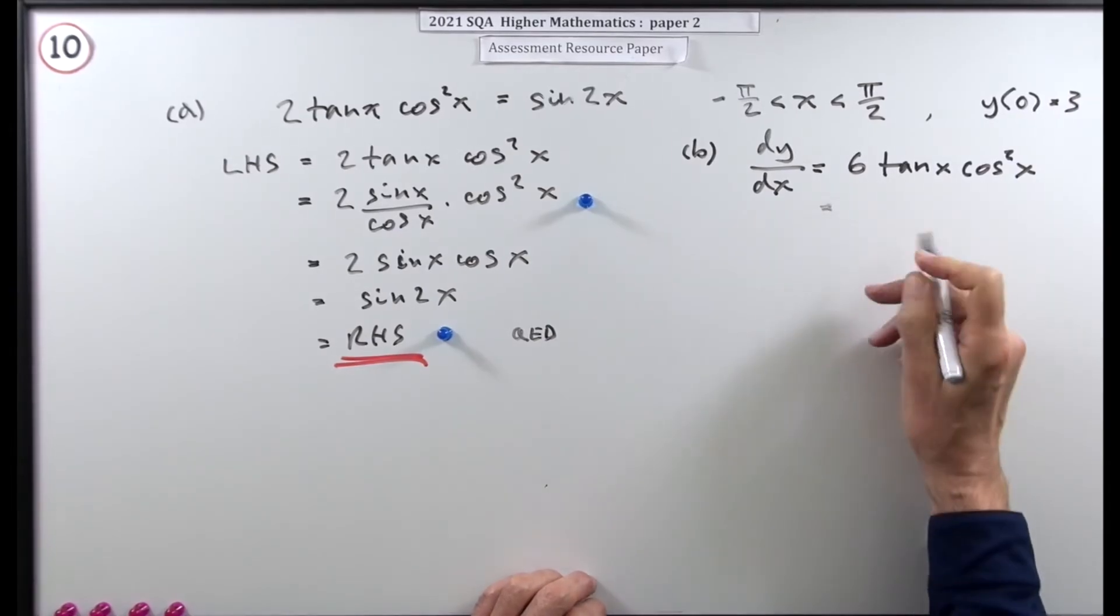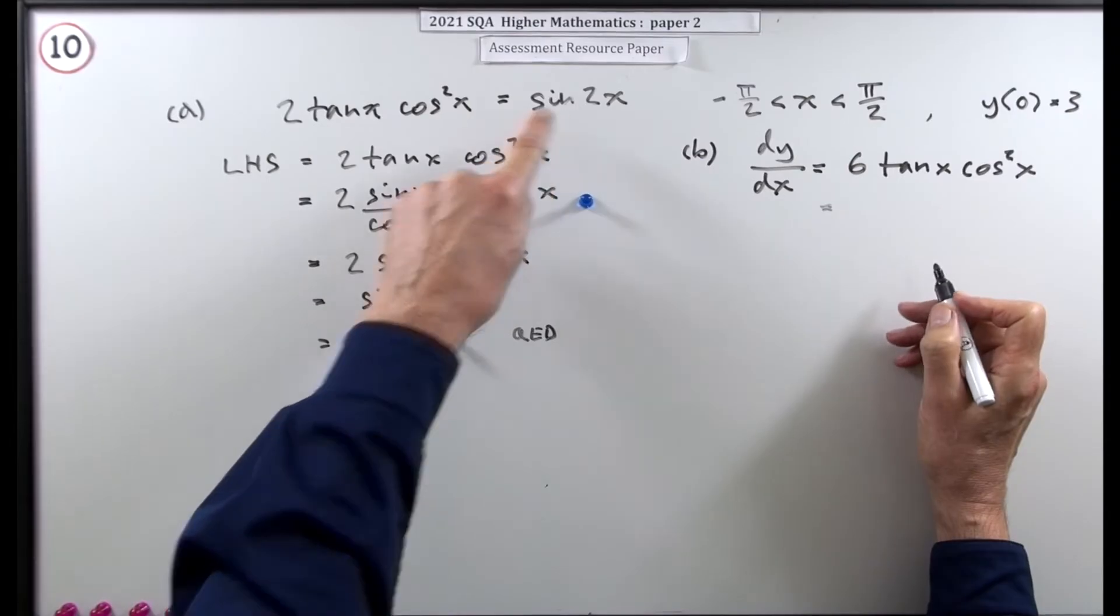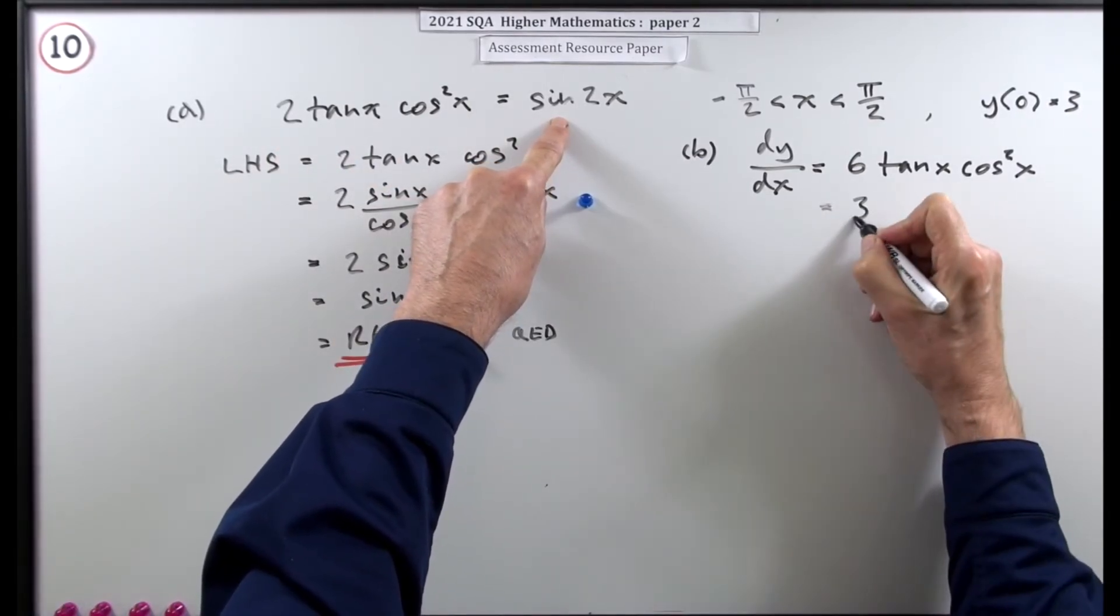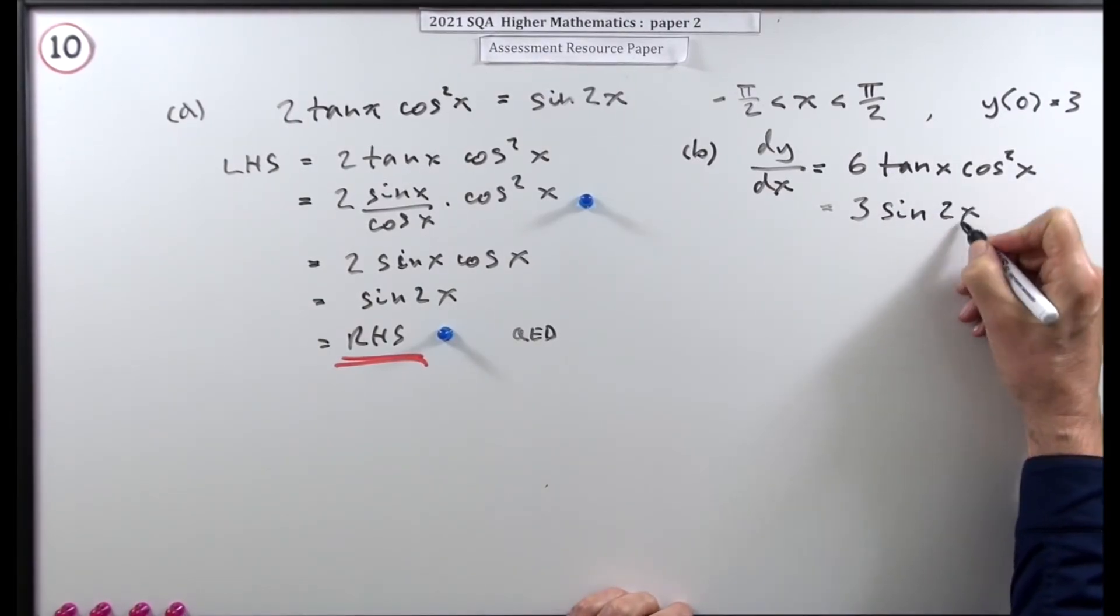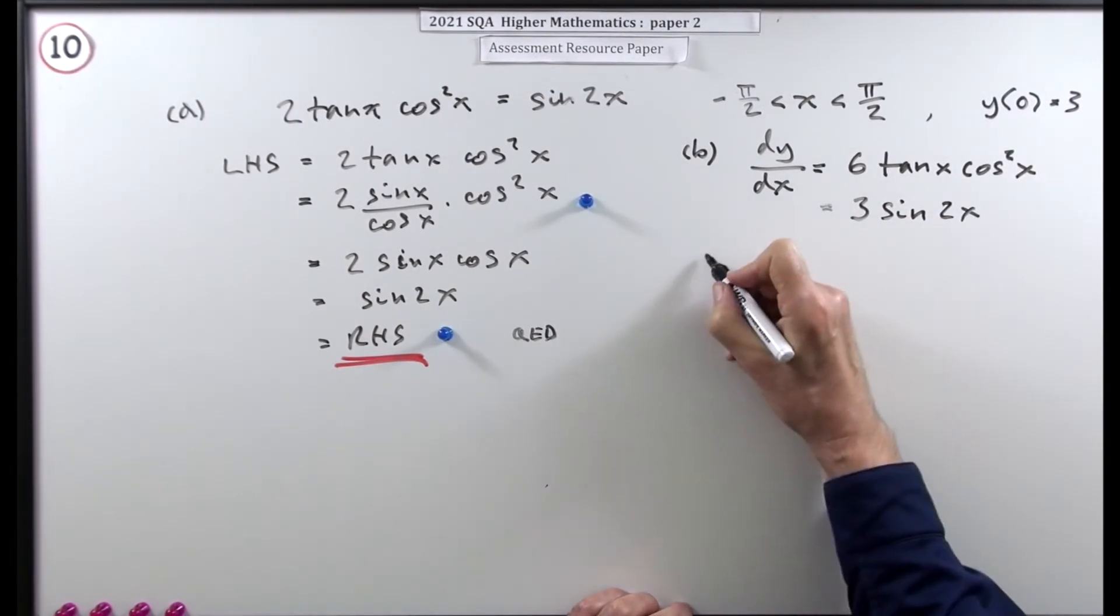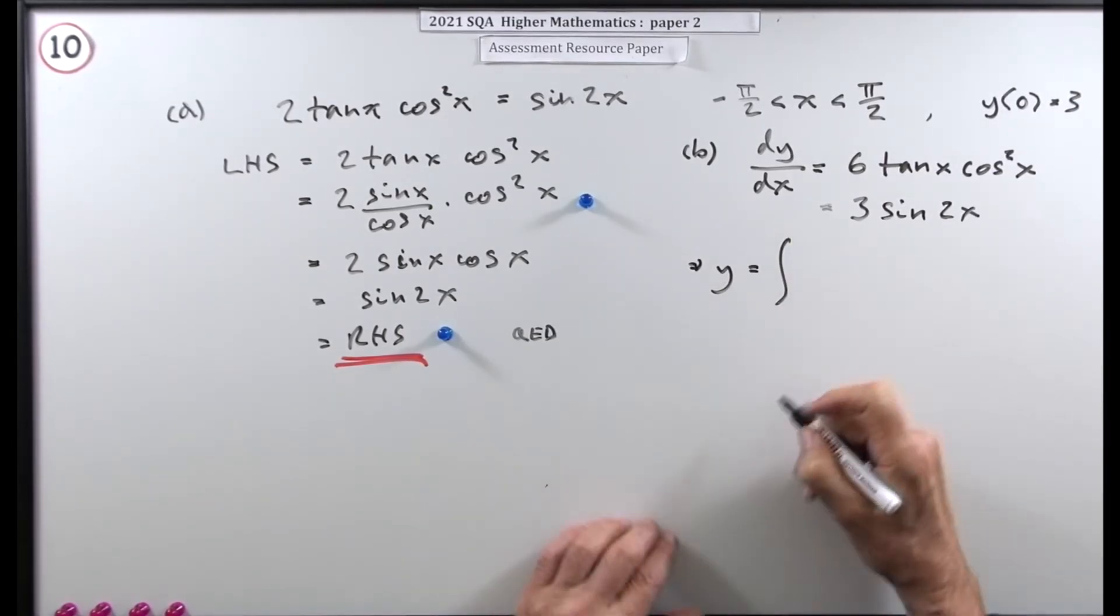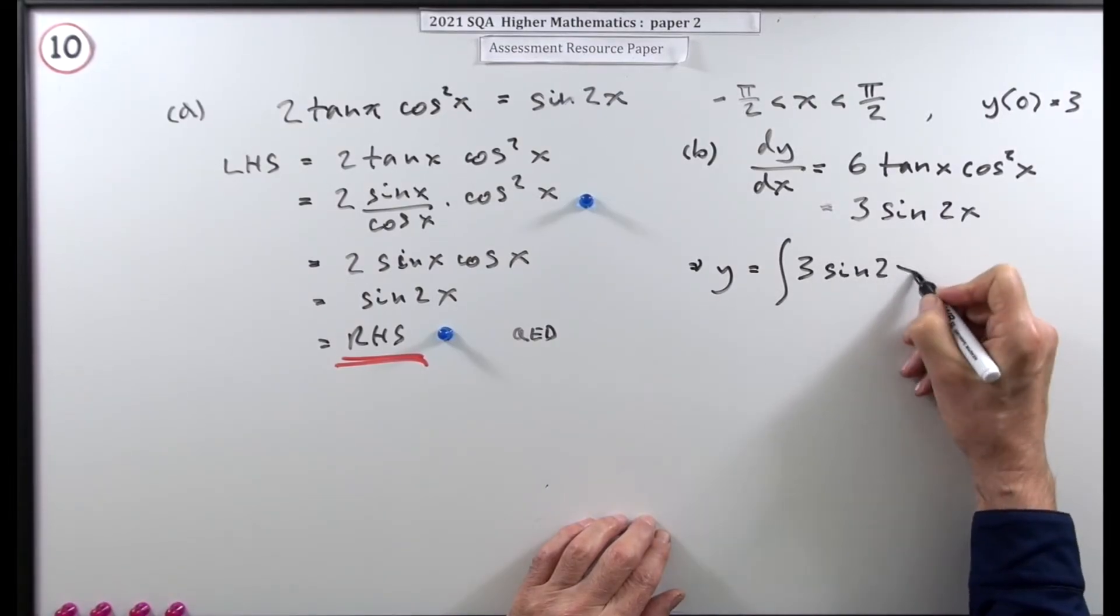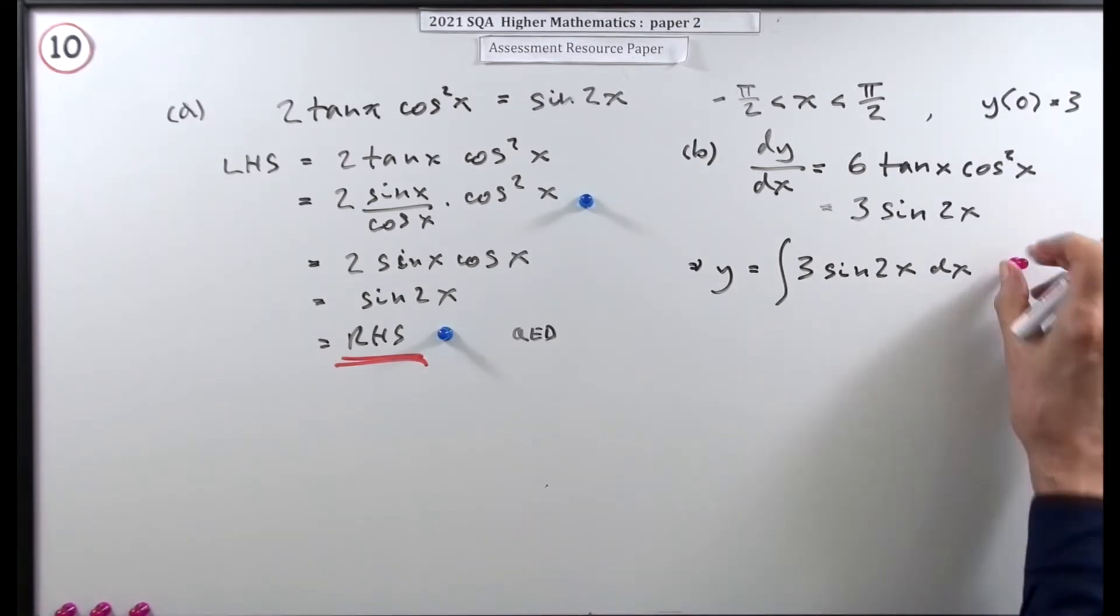The first thing I could do is simplify it by using this identity. Now if two of them produce that then six of them will be three lots of that. So you'd just jump in with 3 sin 2x. Which means I can now find y by integrating that back up. So it's the integral of 3 sin 2x dx. That's worth a mark.